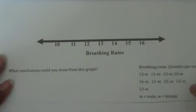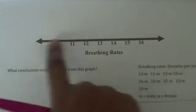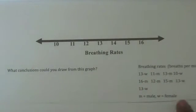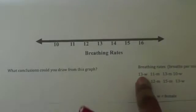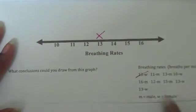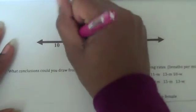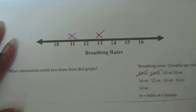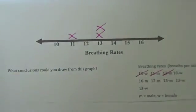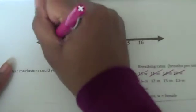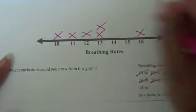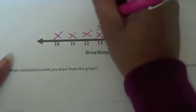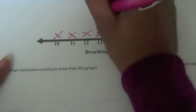We're actually going to make this line plot about breathing rates. Notice we have our number line going from 10 to 16. All you do is mark an X every time you see that piece of data occur. We've got a female who breathes 13 breaths per minute — put an X at 13. A male who breathes 11 — X at 11. Another male at 13, a female at 10, a male at 16, a male at 12, a male at 15, a female at 13, and another female at 13.